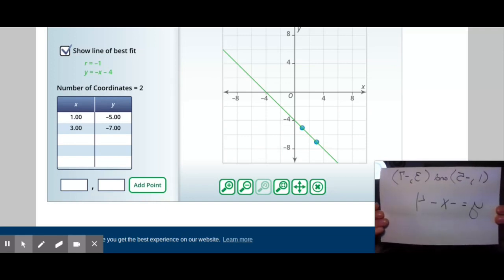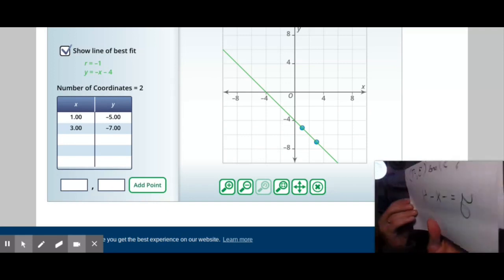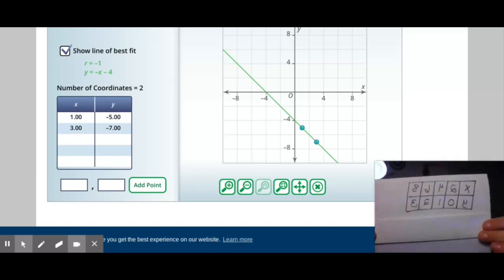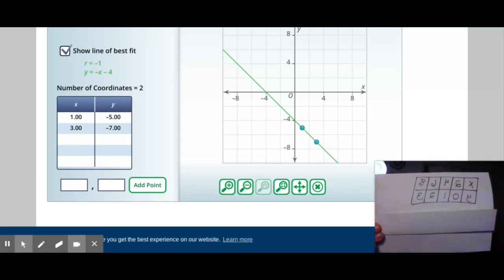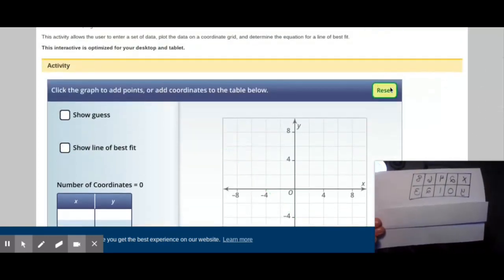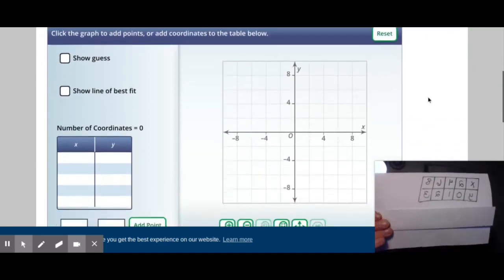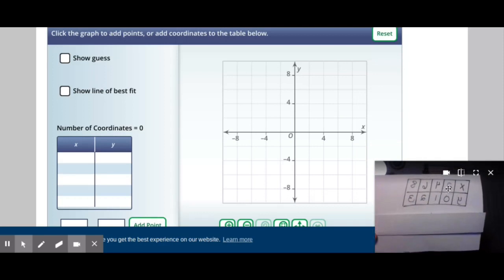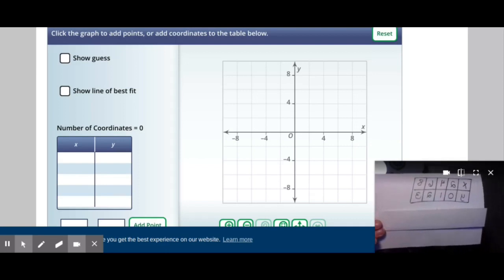So the equation of a line connecting 1 negative 5 and 3 negative 7 is y equals negative x minus 4. What if however I give you a table of values instead of points? Well fun fact: if I hit reset, a table of values are points.